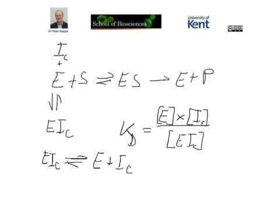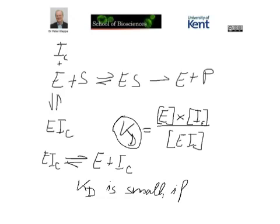Once we've reached this equilibrium here, we get this dissociation constant Kd. And Kd dissociation constant is small if the concentration of the enzyme-inhibitor complex is large. So I just abbreviate that in this case. What does this actually mean?